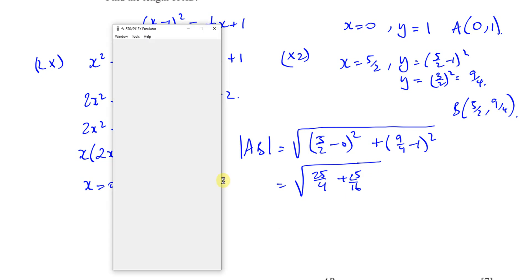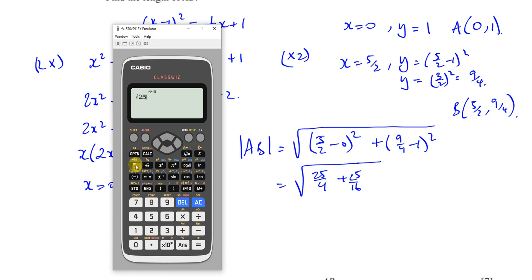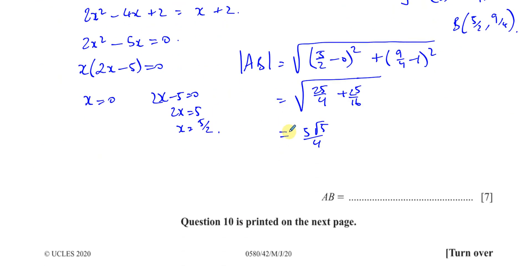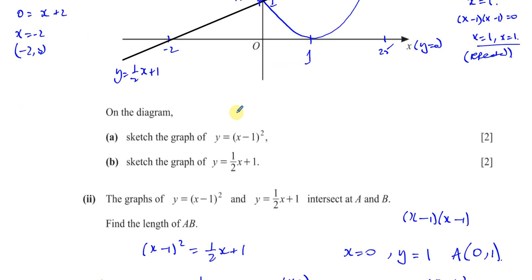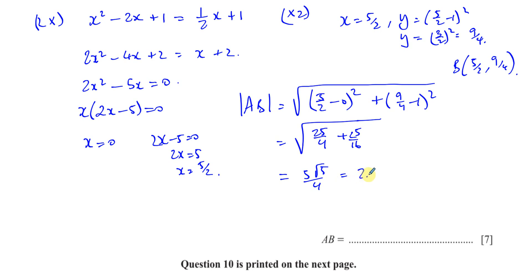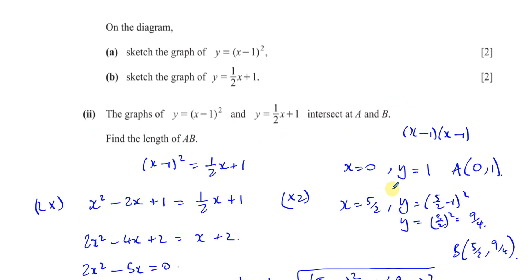So the square root of 25/4 plus 25/16. Putting this in the calculator gives 5 root 5 over 4. We don't leave it in exact form since the instructions say to round non-exact answers to 3 significant figures. The decimal is 2.795..., so rounding to 3SF gives 2.80 units. That is the length of the line between A and B.